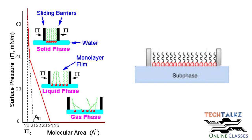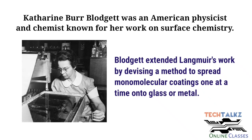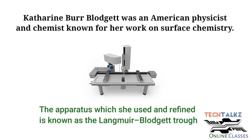This monolayer is called a Langmuir monolayer, named after the American chemist Langmuir. Later, Catherine Blodgett, also an American chemist, extended Langmuir's work by finding a method to transfer monomolecular layers one at a time onto a glass or metal sheet. The apparatus she used and refined is known as the Langmuir-Blodgett trough.